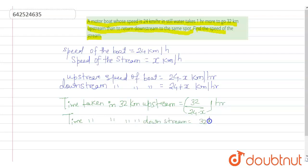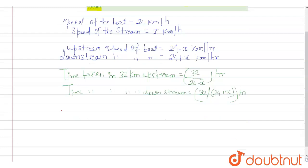As given in the question, the difference between upstream and downstream time is one hour. So 32 divided by (24 minus x) minus 32 divided by (24 plus x) equals 1. This becomes [32(24+x) - 32(24-x)] divided by (576 - x²) equals 1.